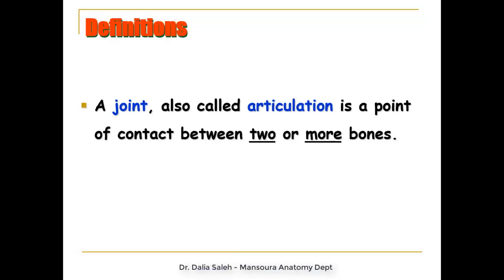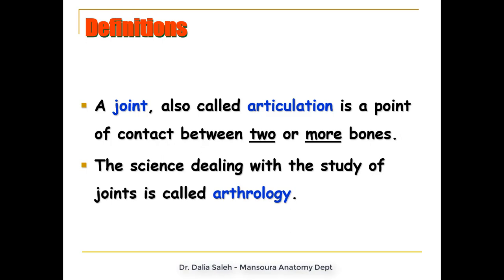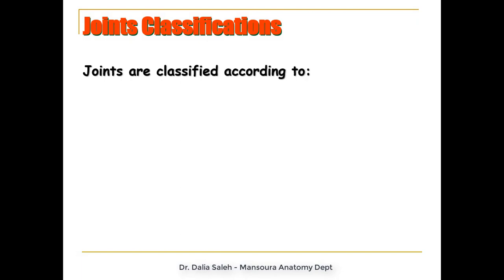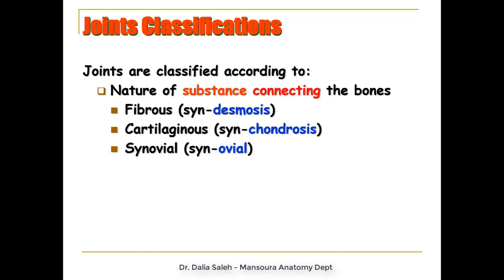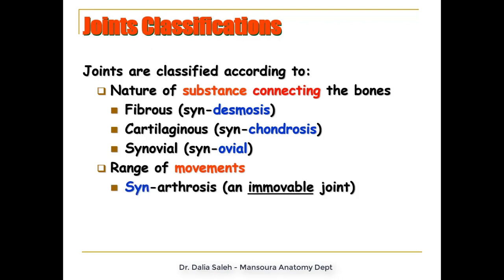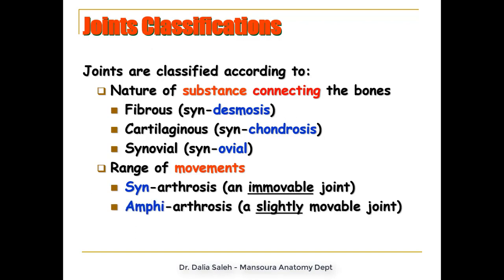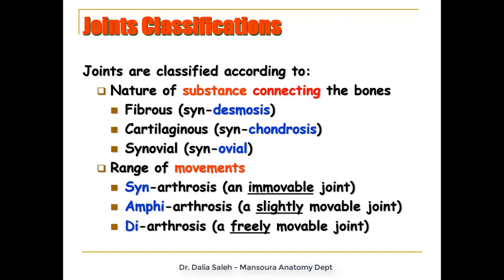A joint, also called articulation, is a point of contact between two or more bones. The science that deals with the study of joints is called arthrology. We can classify the joints according to the nature of the substance connecting the bones together into fibrous joints or syndesmosis, cartilaginous joints or synchondrosis, and synovial joints. The prefix 'syn' means together. We can also classify them according to the range of movements into synarthrosis (immovable), amphiarthrosis (slightly movable), or diarthrosis (freely movable).